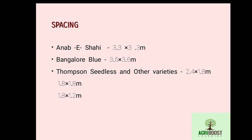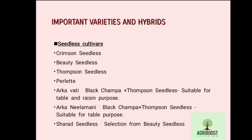Seedless cultivars include Crimson Seedless, Beauty Seedless, Thompson Seedless, and Perlette. Arka Avati and Arka Neel Mani are seedless hybrids. Arka Avati is a hybrid cross between Black Champa and Thompson Seedless, suitable for table and raisin purpose. Arka Neel Mani is a hybrid cross between Black Champa and Thompson Seedless, suitable for table purpose. Sharad Seedless is a selection from Beauty Seedless.